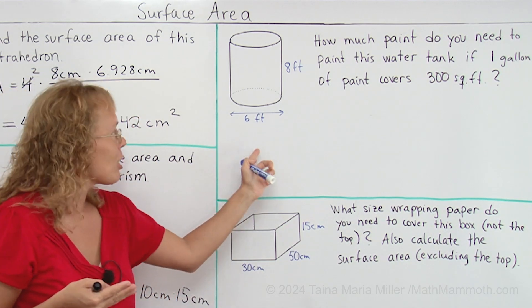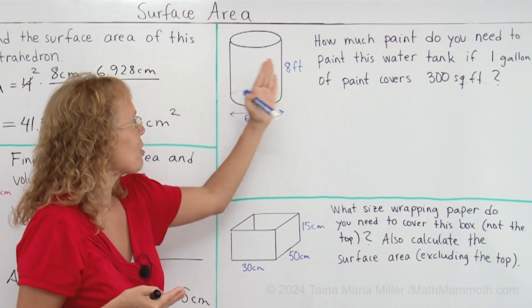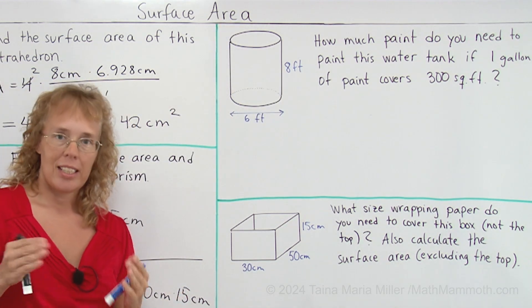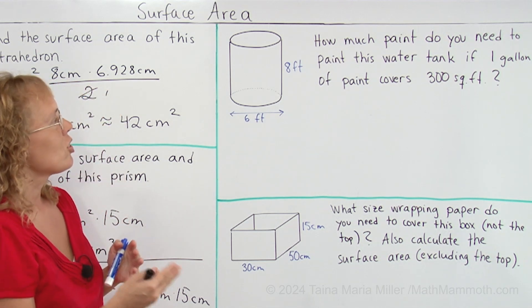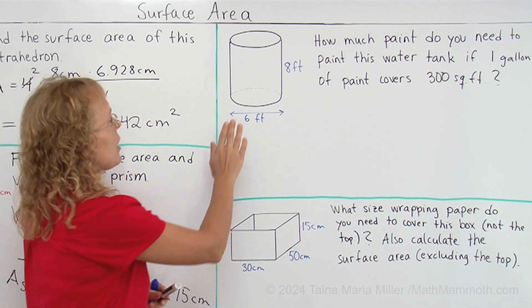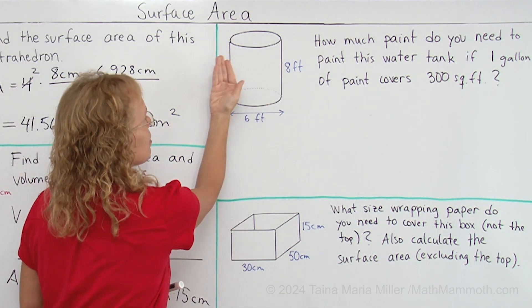You're gonna paint this around it and then the top so we're gonna calculate that area and then check how much paint we need. For the cylinder here we have this face that goes around it and then we have the top to calculate.